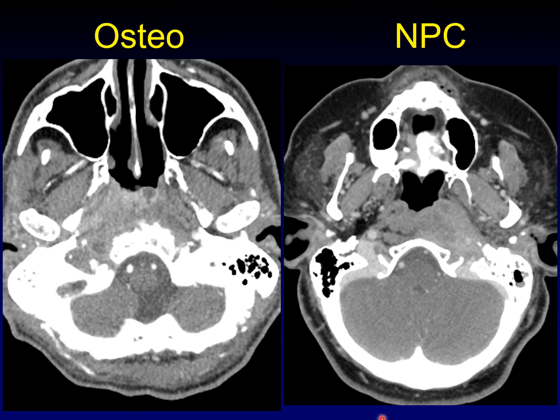It turns out that patient number one has osteomyelitis of the central skull base — this was a bacterial infection. And patient number two has a nasopharyngeal carcinoma that was beginning to erode into the clivus. The teaching point here is that these can be very difficult to tell apart, and even if I end up preferring osteomyelitis or preferring NPC, they usually both end up on my differential diagnosis of the clivus.